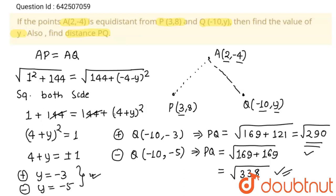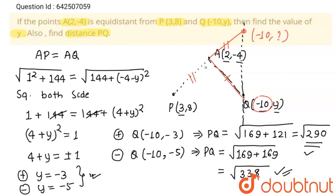Thank you students. To see how these two points work geometrically: suppose this is the line x = -10, so at x = -10, point Q lies on this line. On this line there will be one point whose distance from A equals AP, and there can also be another point with x-coordinate -10 whose distance is the same as AP. So these are the two lengths PQ. Thank you students.